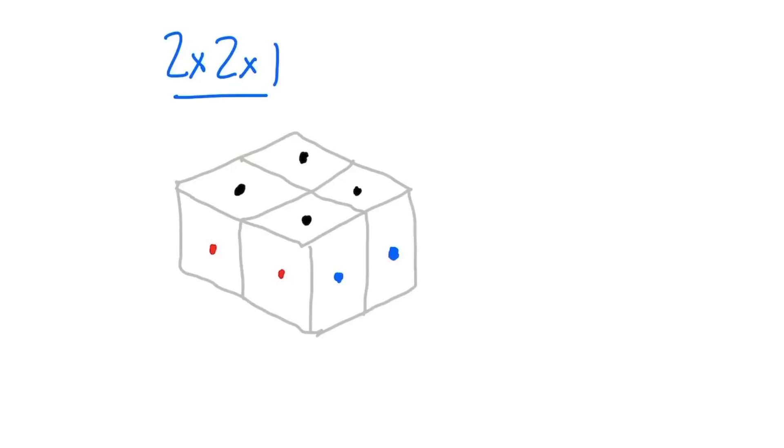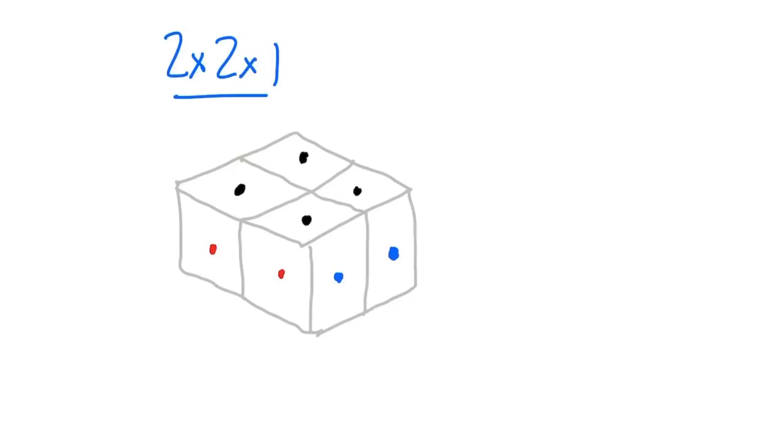Let's start with the solved state. If we were to do 0 turns on the puzzle, how many permutations could happen? It's only 1 because it's the solved state, and 0 turns changes nothing.